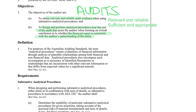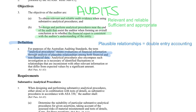Analytical procedures are defined as a means of evaluating financial information through analysis of plausible relationships among financial and non-financial data. Those plausible relationships come from double entry accounting — when one thing goes up, something else might go down, or two things might move in the same direction.